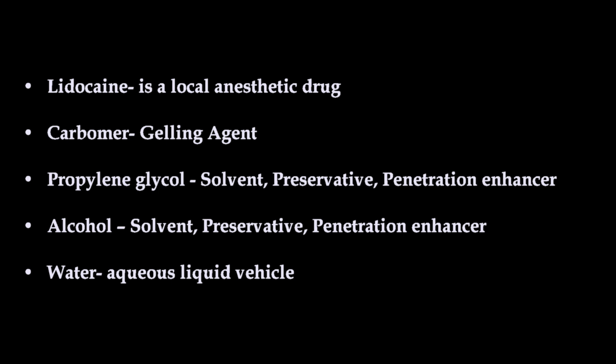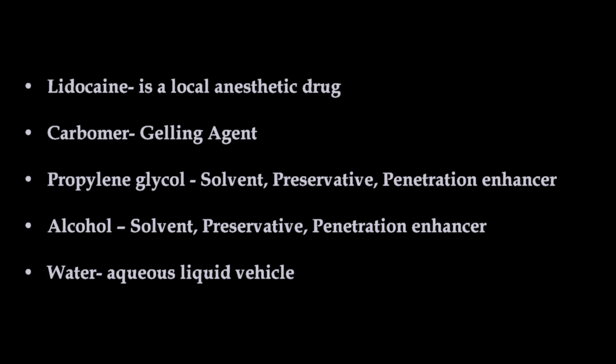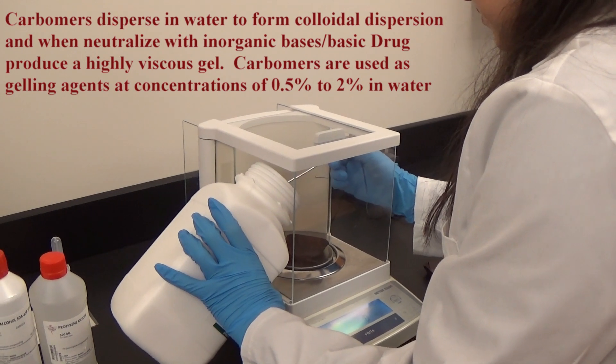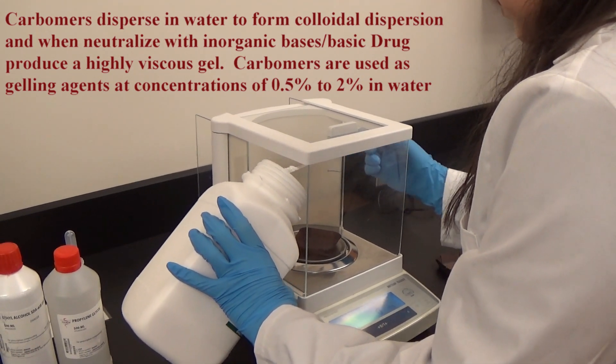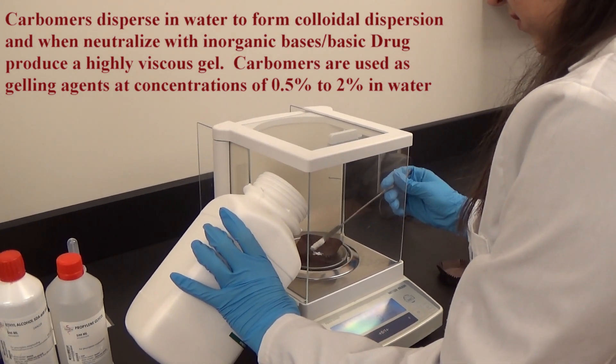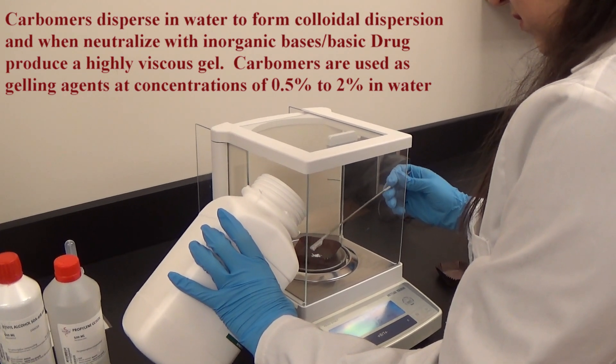Before we get started, we'll need to calculate the amount of each ingredient required to fulfill the prescription. First, we'll weigh the carbomer 940 into a weighing boat and keep it aside.